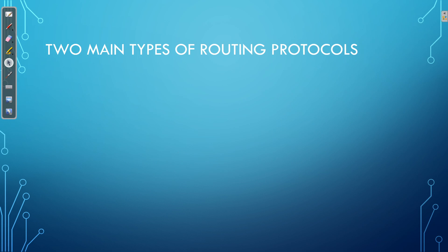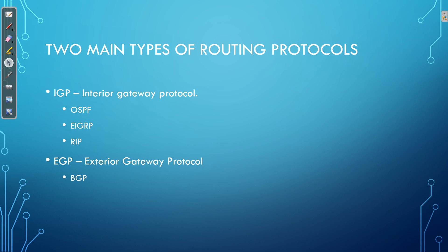It's important to understand that there are two different types of routing protocols designed for two different scenarios. They are IGPs — Interior Gateway Protocols — such as OSPF, EIGRP, and RIP; and then we have Exterior Gateway Protocols, like BGP. The difference between IGPs and EGPs is that IGPs allow routers within the same autonomous system to exchange routes and build their routing table.